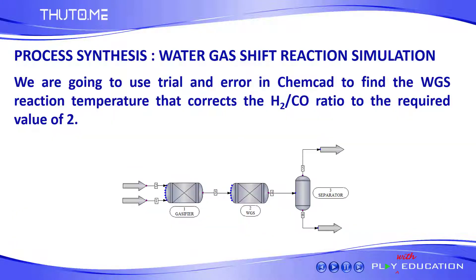We are going to use trial and error in CAMCAD to find the water gas shift reaction temperature that corrects the H2 to CO ratio to the required value of 2.